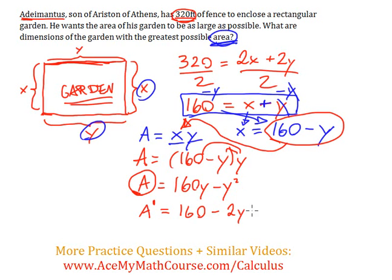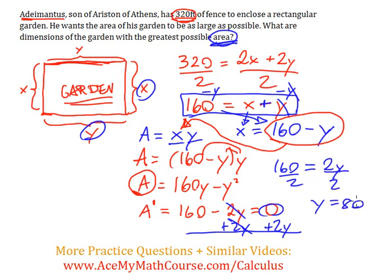And when we optimize, we want to make the derivative equal to 0. Right? And now I'm just going to solve for y. So I'll just add 2y to both sides of the equation. And I'll end up with 160 is equal to 2y. Great. Now I can just divide both sides by 2, and y is 80.